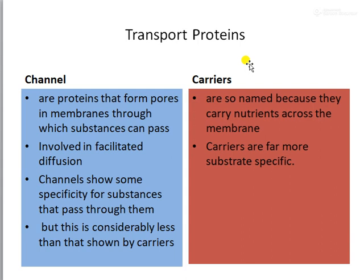A channel protein is a protein which has a pore through it. Consider a block of wood — if you drill a hole through the center of it, you can pass substances through it. Similarly, a channel protein is a protein which has pores in the membrane so that substances can pass through those pores. It is mainly involved in facilitated diffusion.